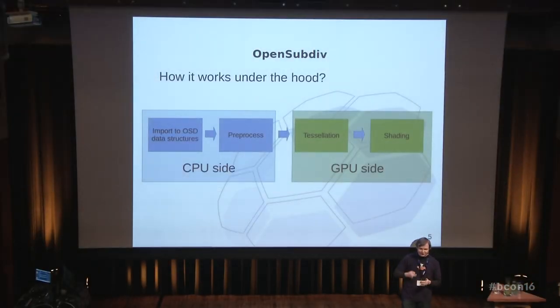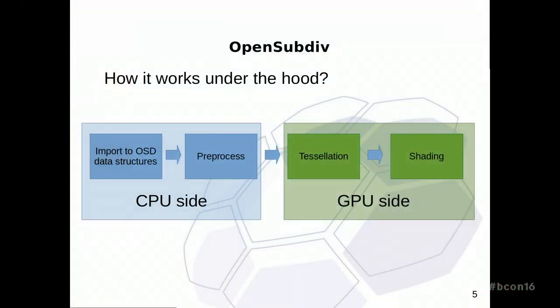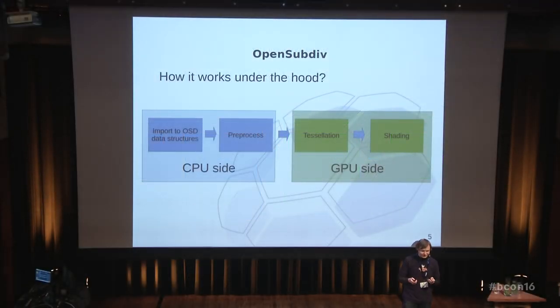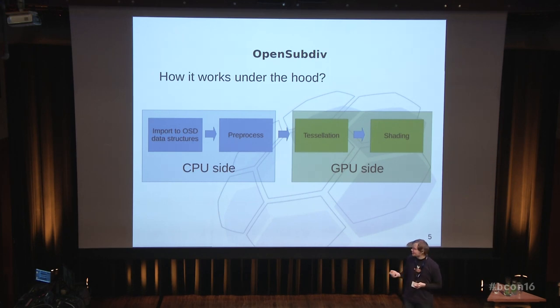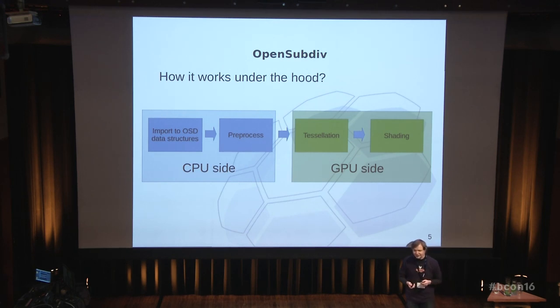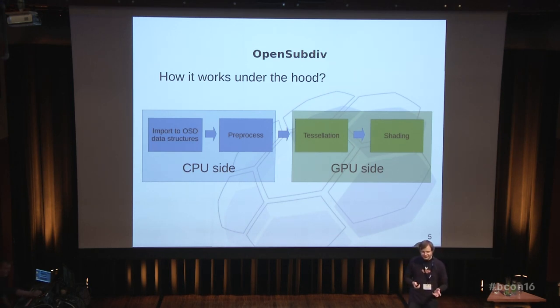So how does OpenSubdiv work under the hood? First, you have the CPU side, which analyzes your topology — it checks which type of faces you have, the connectivity between vertices, and everything. By doing this it builds so-called patches, subdivision patches, which are basically rectangular thingy with subdivision points on them. This only happens once on CPU when you change topology. Once you have the analyzed mesh, all this data gets pushed to the GPU side, and it's the GPU that is responsible for tessellating the actual patch and doing shading on top of the patch.